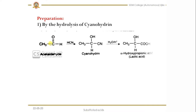Starting with acetaldehyde — when you treat acetaldehyde with hydrogen cyanide, the cyano group attacks the carbonyl carbon, and as a result a shift of the bond takes place. The hydrogen is abstracted by the oxygen, and as a result we get cyanohydrin. When you hydrolyze the cyanohydrin, the cyano group is converted to a carboxylic group.